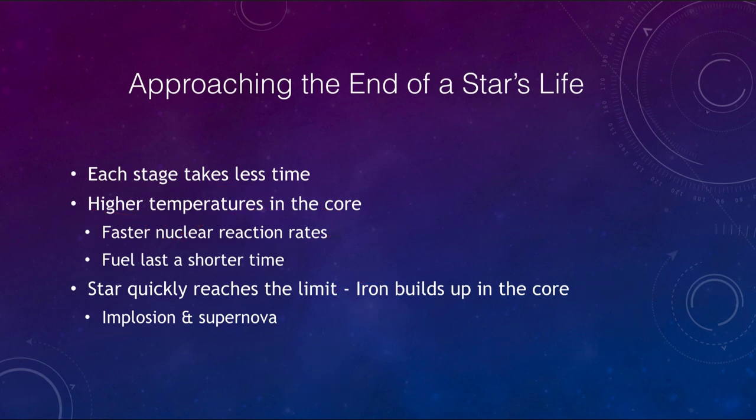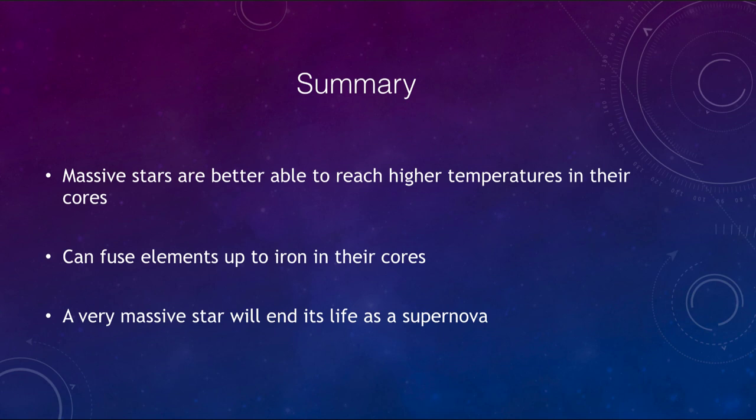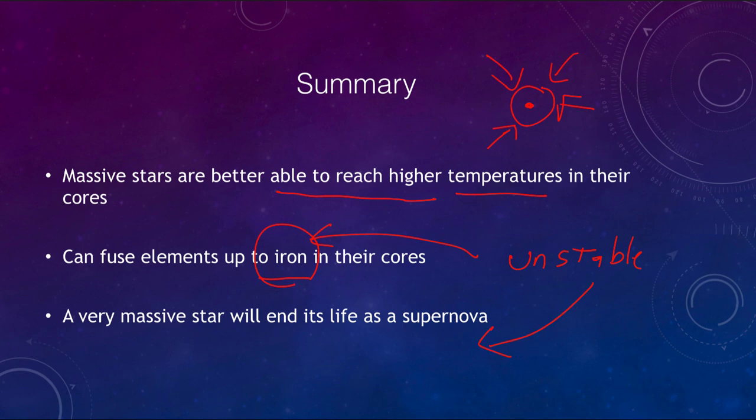So let's finish up with our summary here. What we found is that massive stars are better able to reach higher temperatures, higher pressures, because there is more material pushing down on them from above, and that allows the temperature to increase. So you get a higher temperature in the core, and therefore you can fuse heavier elements, and in fact, they can fuse up to creating iron in their core. Eventually, if you form an iron core, the star becomes unstable, and what that means is that it will end its life as a supernova. The star will actually explode. This can never happen for a star like our sun. Our sun will never get close to forming iron in its core. It takes a star many times the mass of our sun, and it's only the very largest and most massive stars that are able to undergo this type of supernova explosion.